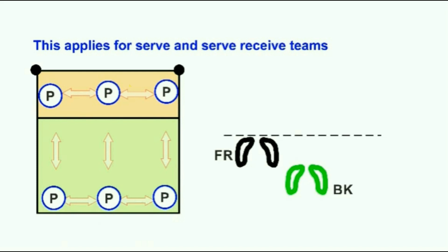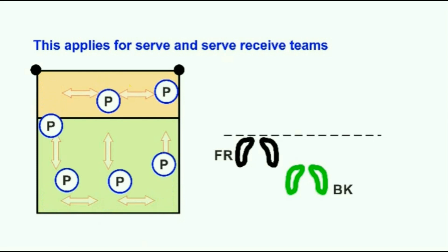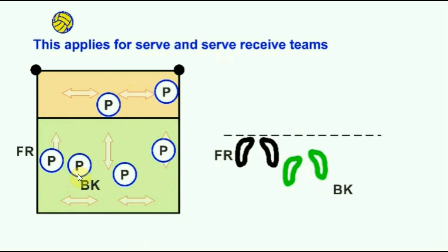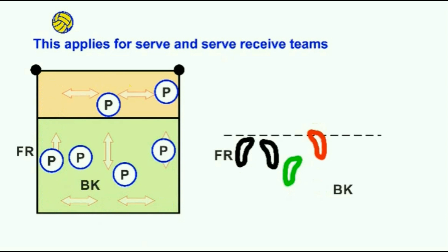If we bring the frontcourt player back to be part of the serve-receive, we have to make sure they are no further back than the backcourt player — otherwise that's a fault. The positional fault occurs at the point of serve, which is not when the referee blows the whistle. A lot of people think it is and start moving at that point, but they get caught out. The point of serve is when somebody physically hits the ball to serve. If you're in the wrong position at that point, the referee will blow for a foul — you lose a point and they gain serve.